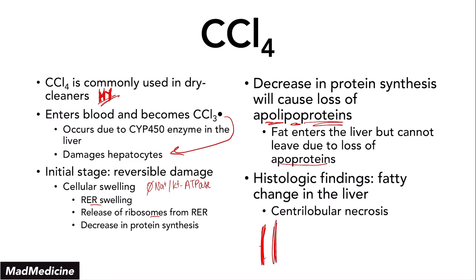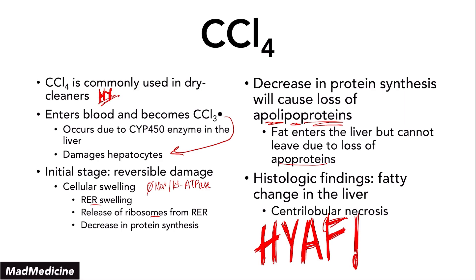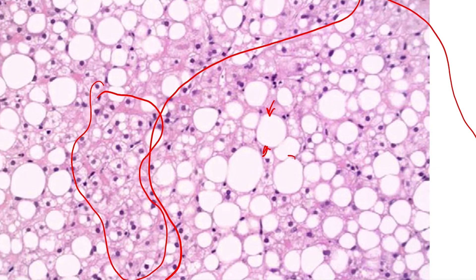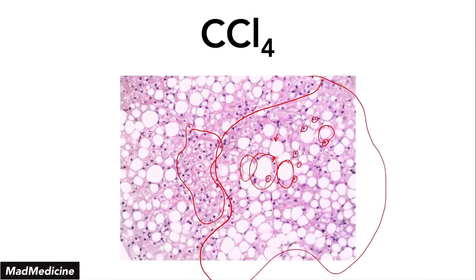This is a very high-yield topic you need to remember, because very few scenarios will give you this type of presentation — essentially fatty liver disease in someone who works in the dry cleaning industry and is otherwise healthy. The mechanism: carbon tetrachloride becomes carbon trichloride radical, which damages hepatocytes, causes a decrease in protein synthesis specifically of the apolipoproteins, and leads to fatty liver. Under histology, you can see normal hepatocytes next to fatty liver cells that have fat globules in the cytoplasm. These are not dead cells — each has a nucleus — but they contain fat globules in the hepatocytes.